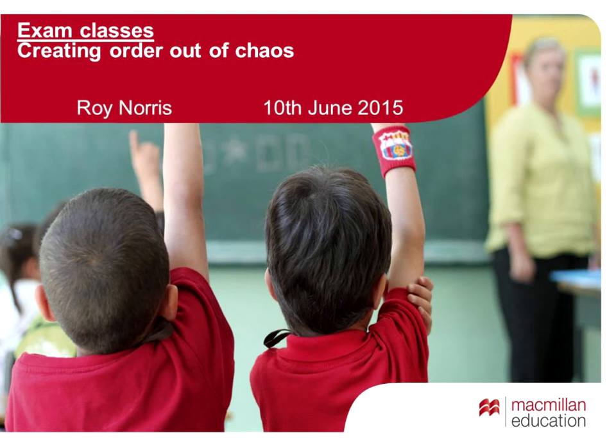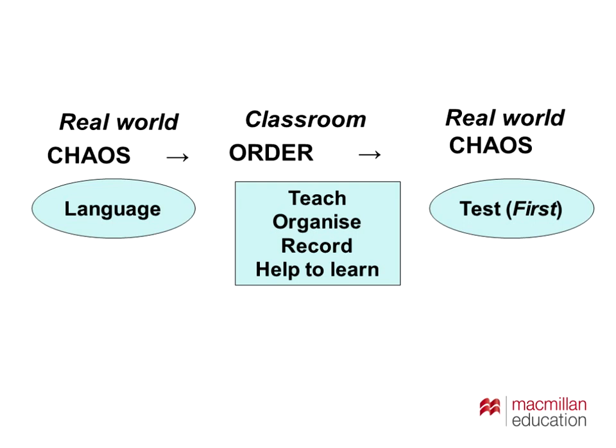The basic model for this talk — and really for my teaching and my writing — is this. On the left you can see the real-world chaos. Language is chaos when you're learning it, as I just explained. In the classroom and in coursebooks, it's our job — the square box in the middle — to create order from that chaos: to teach, to organise language, to help students record that language, and to help students learn it. It seems very basic, but often it doesn't happen.